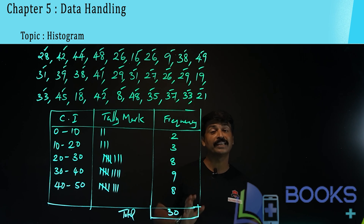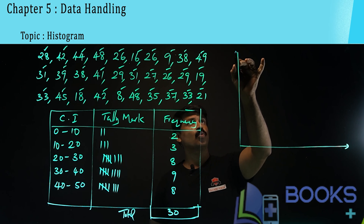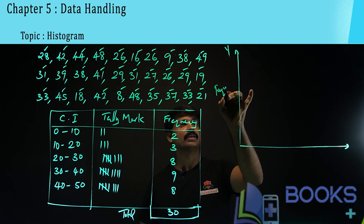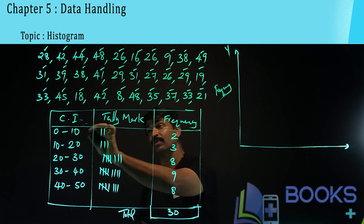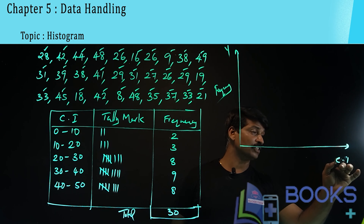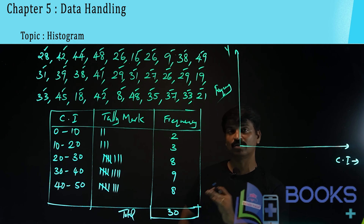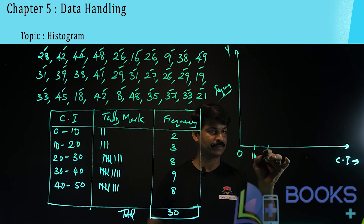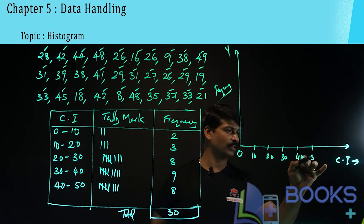Now we have to draw a histogram. On the y-axis, you should mark the frequency. On the x-axis, you should include the class interval. The class intervals go from 0 to 50, so let us make 1 unit as 10: marking 10, 20, 30, 40, 50 on the x-axis.